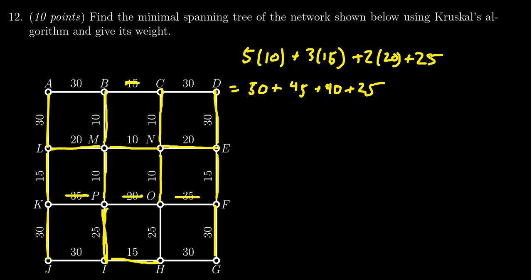That was the most expensive part, but when you add all these numbers together—50 plus 45 plus 40 plus 25 plus 120—that adds up to 280, and that's the cost of this minimal spanning tree.